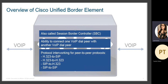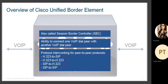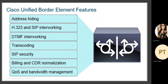The different protocols CUBE supports for internetworking and peer-to-peer protocol communication are: H.323 to SIP, H.323 to H.323, SIP to H.323, and SIP to SIP. These are the protocols supported, and we are talking about VoIP-to-VoIP dial pair communication. These are some features of Cisco Unified Border Element.